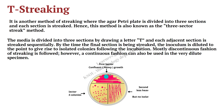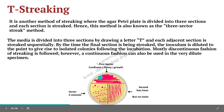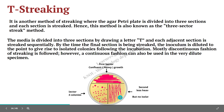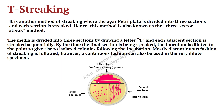In T-streaking, the petri plate is divided into three parts. Here you can see sector one, sector two and sector three. Similar to the quadrant streaking, sector one will be much more dense, followed by sector two which is lesser than sector one, and sector three. In T-streaking you can also streak three different types of microorganisms. T-streaking is also one of the most essential streaking techniques in microbiology.